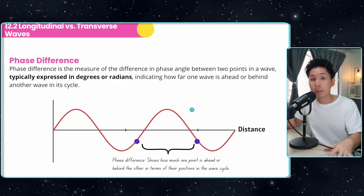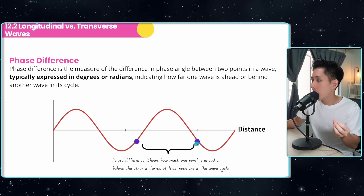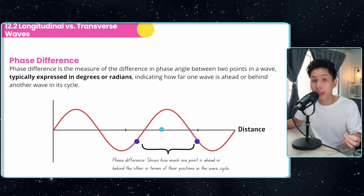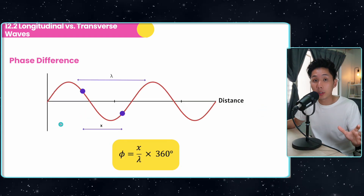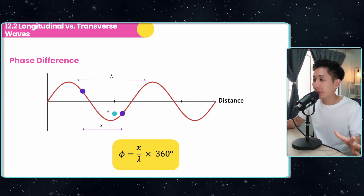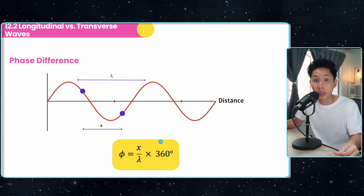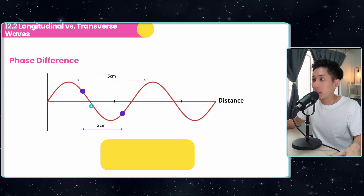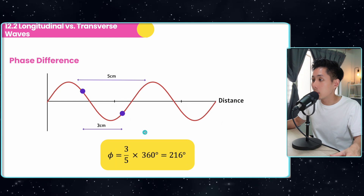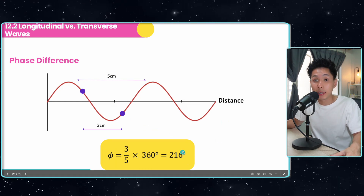Now let's look into the concept of phase difference. In short, it describes how far one point is ahead or behind another point in terms of their position in the wave cycle. This is the formula you can use to calculate phase difference: you take the separation between the two points, divide by the wavelength, and multiply by 360 degrees. For example, if two points are 3 cm apart and the wavelength is 5 cm, you do 3 over 5 multiplied by 360 to get the phase difference.